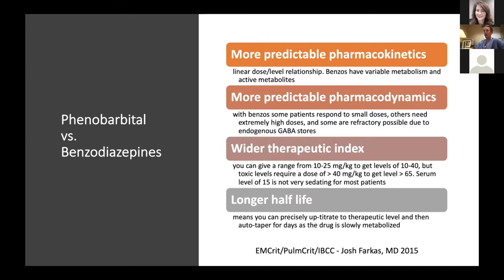Why phenobarb versus benzodiazepines? First, phenobarb has more predictable pharmacokinetics. This linear dose-to-level relationship does not exist with benzos. Depending on the benzo chosen, some are short-acting like midazolam or Ativan, some are relatively long-acting like Valium or Tranxene. Some have lots of active metabolites like Valium, and some really don't, like Ativan — but benzos have highly variable metabolism compared to phenobarb. The second reason is these very predictable pharmacodynamics.